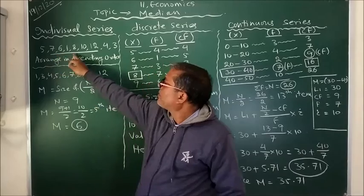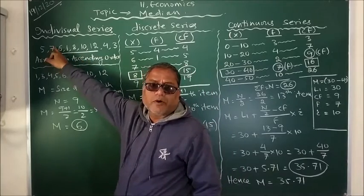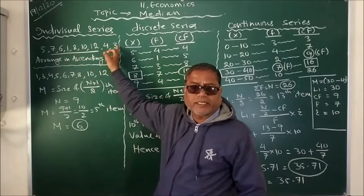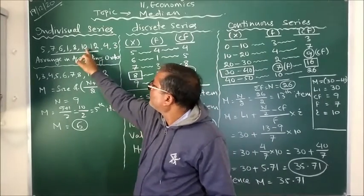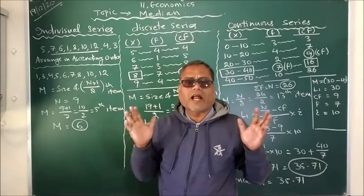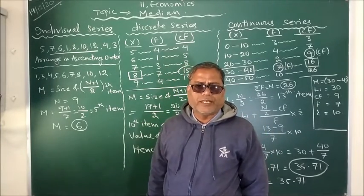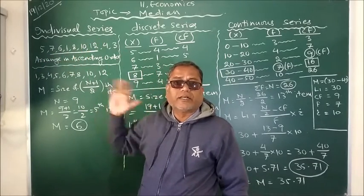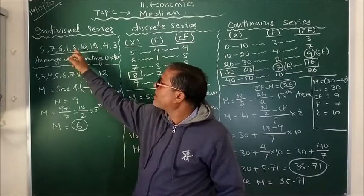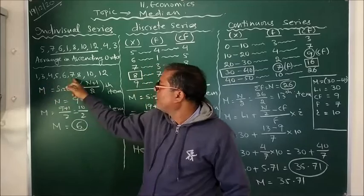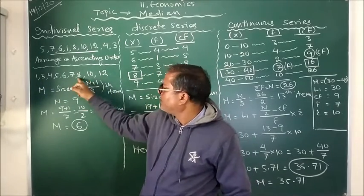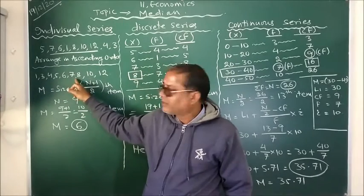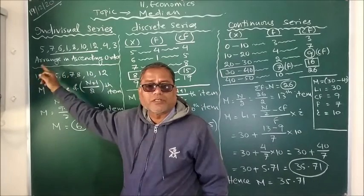As you can see in this question, here we have got an individual series. The values are 5, 7, 6, 1, 8, 10, 12, 4, 3 — total 9 observations. We can see that the values are not arranged in ascending or descending order. So the first job is to arrange the values in ascending order. Here I have arranged the values in ascending order, and the number of observations is 9, so N is 9.